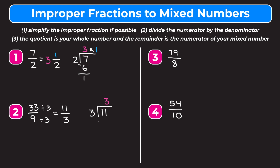Three times three is nine, so we subtract nine. Eleven minus nine is two, giving us three with a remainder of two. We can now write 33 ninths, or 11 thirds, as a mixed number. The whole number part is our quotient of three, the numerator of our fraction part is the remainder of two, and the denominator always stays as is, giving us three and two thirds.